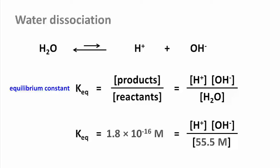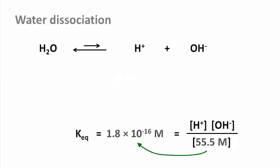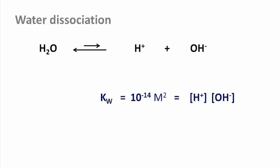Because that concentration basically doesn't change whatever else happens, a new constant has been defined that takes in the water concentration. It is called the ion product constant for water, or Kw, and you can see why. It is the product of the concentrations of proton and hydroxide ions.